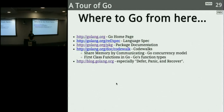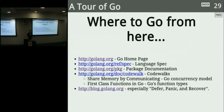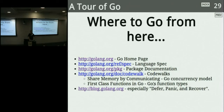Some references: Golang.org is the home page. The language spec is surprisingly readable and pretty short, giving a good sense of how the language hangs together. The package documentation is thorough and readable. There are code walks — 'Share Memory by Communicating' talks more about the concurrency model, 'First Class Functions' talks about function types. The blog has great articles, particularly one about defer, panic, and recover. Thank you.